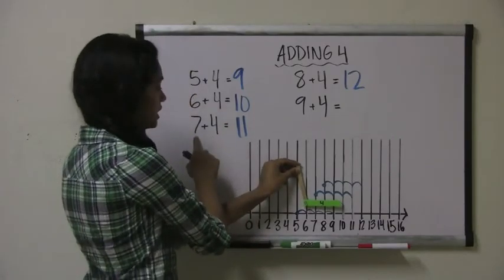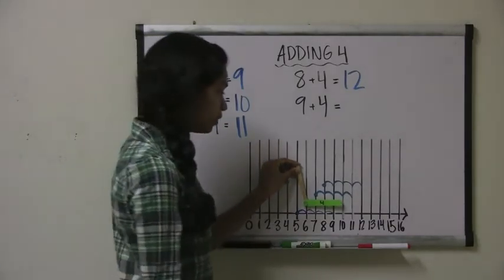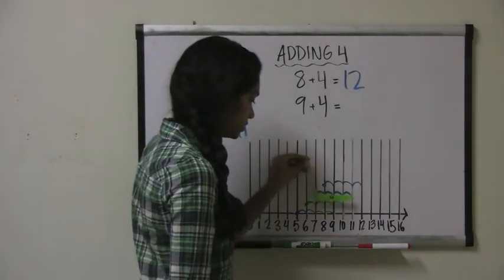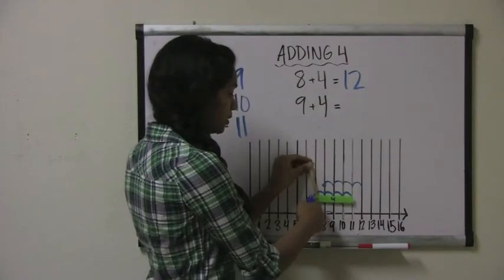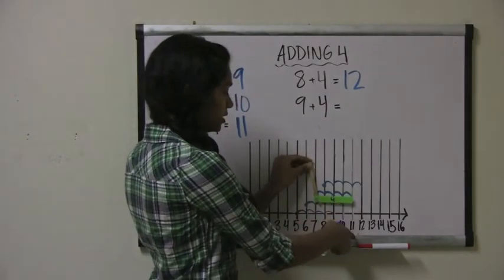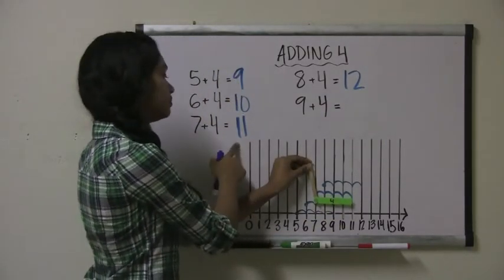Let's try the next one, 7 plus 4. We shift this bar over 1 spot to start with the number 7, and then we jump 4 spots to get to the number 11. So 7 plus 4 equals 11.